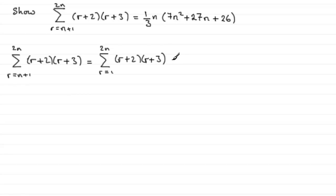But then we have to subtract the terms that are left over—the first n terms. So we would need the sum of r going from 1 to n of (r+2)(r+3).